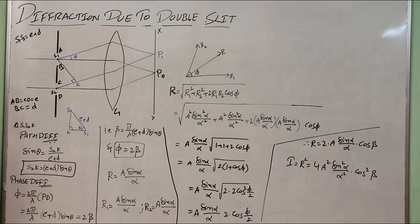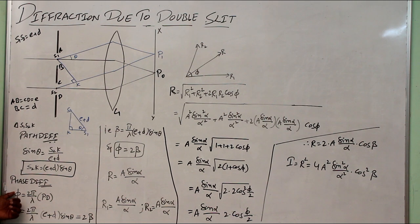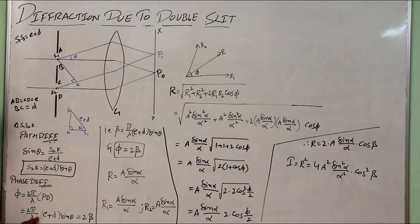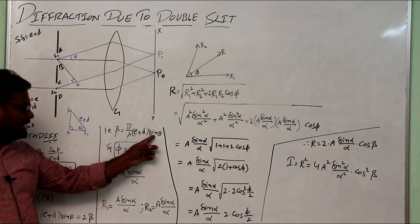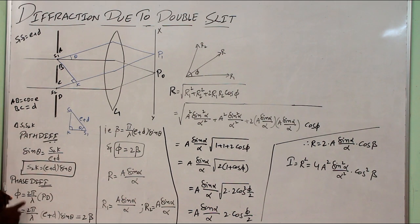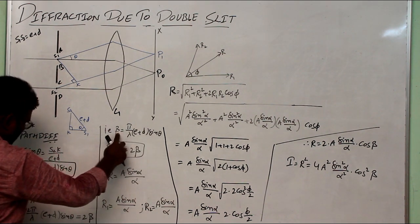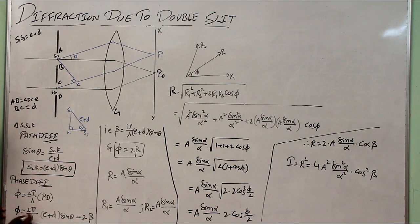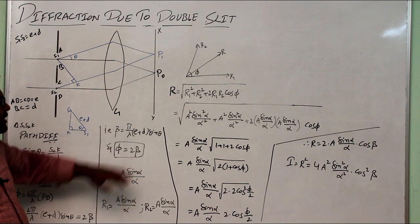To calculate the phase difference, multiply the path difference by 2π/λ. So the phase difference φ = (2π/λ)(e + d) sin theta. Now define β = (π/λ)(e + d) sin theta, so that φ = 2β. This substitution is an important one we will use throughout.